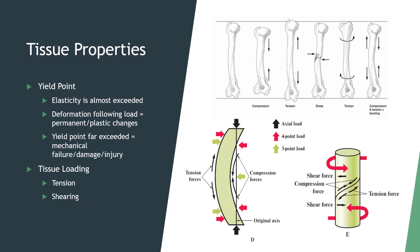Tension is a force that pulls and stresses tissues. Shearing is a force that moves across the parallel organization of a tissue. Torsion is a load that occurs by twisting in the opposite direction from opposite ends. This is important for tissue properties such as bone health, and is how we end up with certain fractures and injury types.